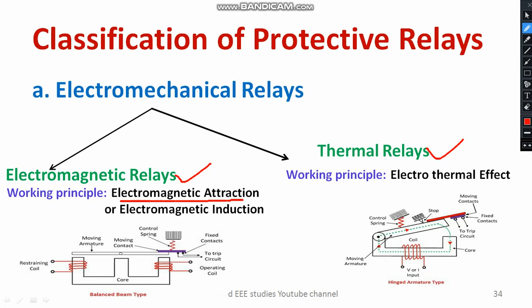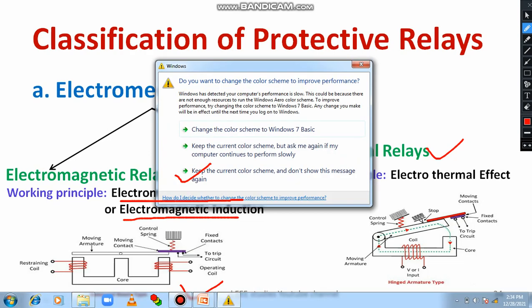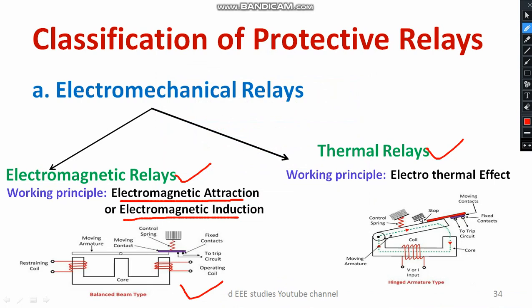You need to understand the difference between permanent magnet and temporary magnet. When a current is passed through a conductor, that conductor becomes a temporary magnet. Another principle is called electromagnetic induction. Looking at the electromagnetic attraction principle, we have a core material with an operating coil and restraining coil connected to the core, a moving armature, and a spring control mechanism. When current passes through the core, it becomes magnetic, attracting the moving armature towards the core. At that point the contact position changes, directly activating the trip circuit. If the magnitude of current is very high, the attraction rate will also be higher, activating the trip circuit.